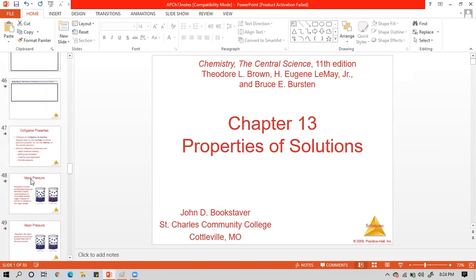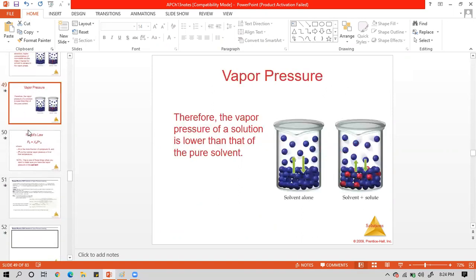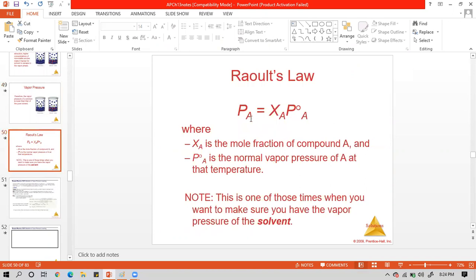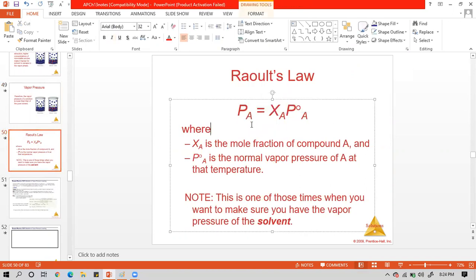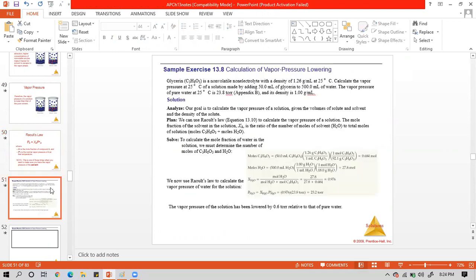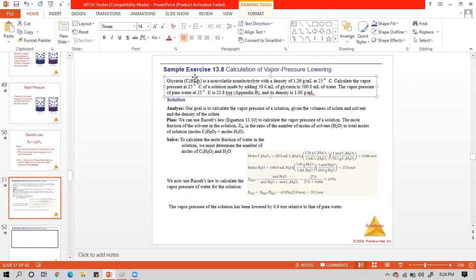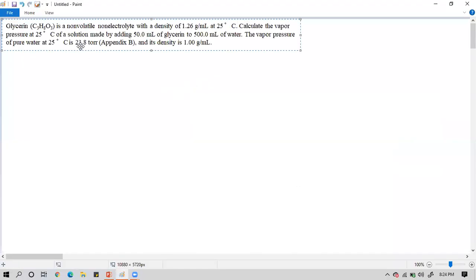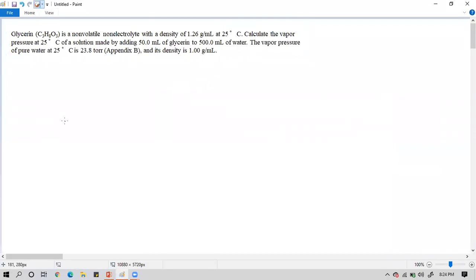Namely the vapor pressure lowering. The vapor pressure lowering formula is also known as Raoult's Law, by which this one is the vapor pressure of the solvent with respect to the mole fraction and the presence of the solute in the solution. As you can see here, glycerin is a non-volatile, non-electrolyte with a density of 1.26 grams per ml at 25 degrees Celsius.